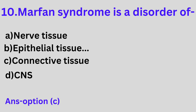Question 10: Marfan syndrome is a disorder of A. Nerve tissue, B. Epithelial tissue, C. Connective tissue, D. Central Nervous System. Option C is the correct answer. Marfan syndrome is a disorder of connective tissue.